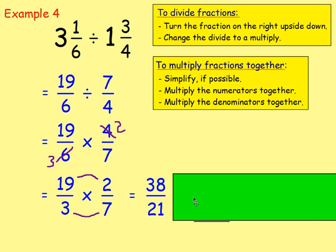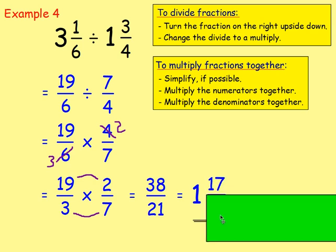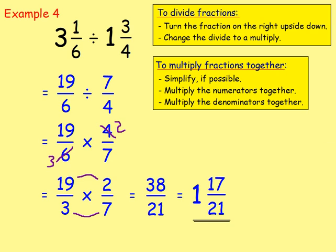Because we're left with an improper fraction, we want to rewrite it as a mixed number. Think: 38 divided by 21 — how many 21s in 38? That's just 1, with a remainder of 17. Because the denominator is 21, we keep it as twenty-oneths. So the answer is 1 and 17 over 21.